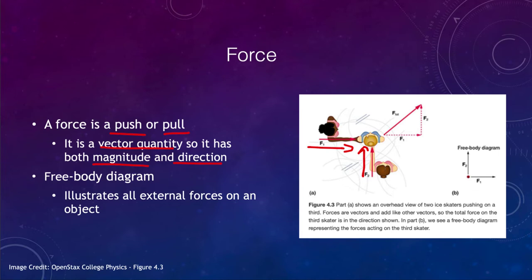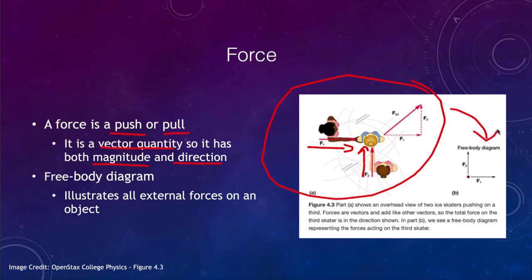We often use these in what we call a free body diagram. So instead of drawing the whole diagram, we can simplify it to what's shown on the right. You have the object in question as a dot at the center, and then F2 is pushing it upwards and F1 is pushing to the right. You could add those forces together as a vector to get a total force and the direction in which it is acting.